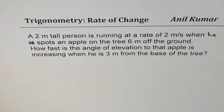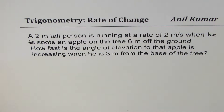I'm Anil Kumar sharing with you an application question using trigonometric functions. A 2-meter tall person is running at a rate of 2 meters per second when he spots an apple on the tree 6 meters off the ground. How fast is the angle of elevation to that apple increasing when he is 3 meters from the base of the tree?